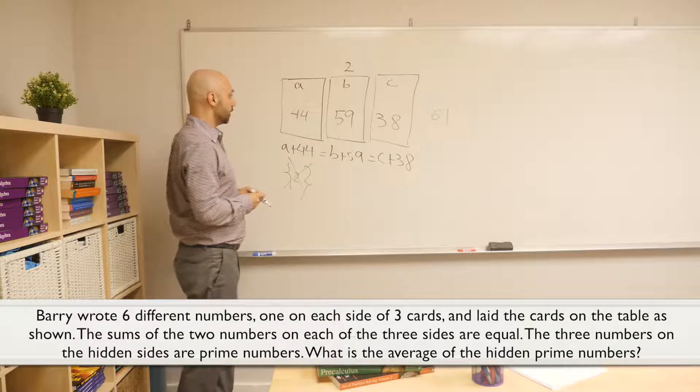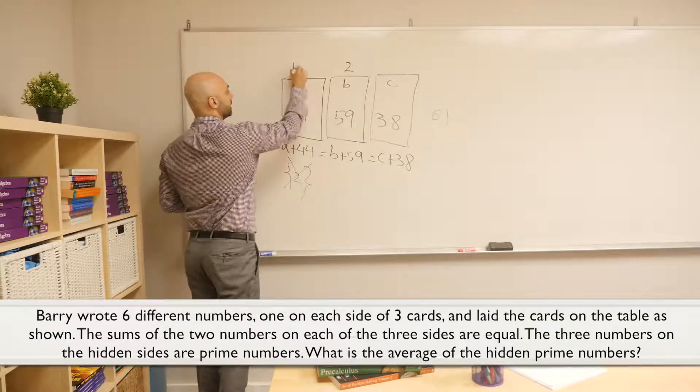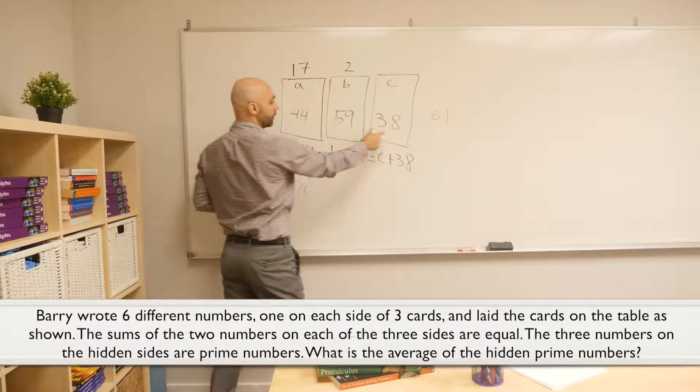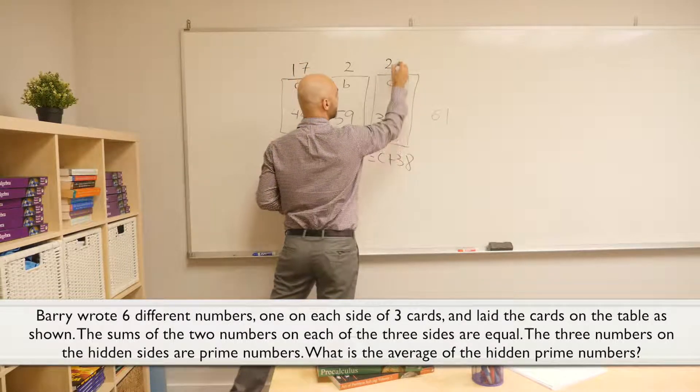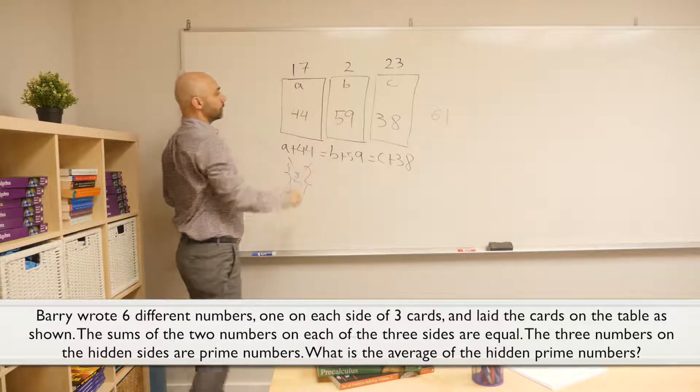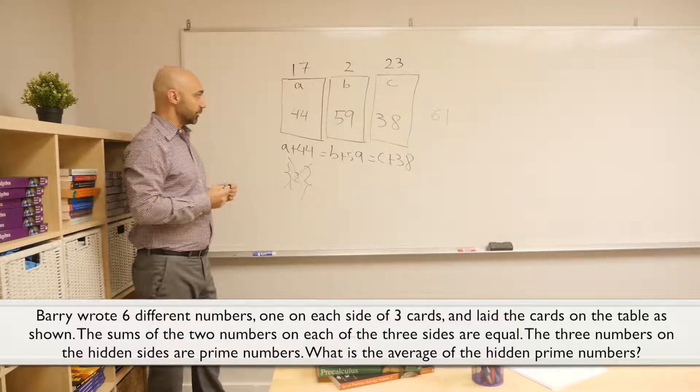44, we want to get to 61, so we're going to have 17 here. And for 38, the only number that gets us to 61 is 23. And they're all prime numbers. So these would be the prime numbers that we're looking for.